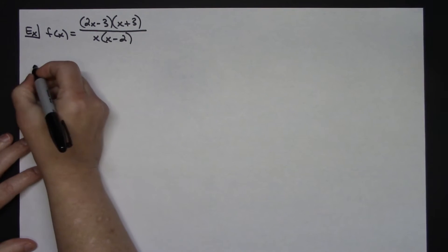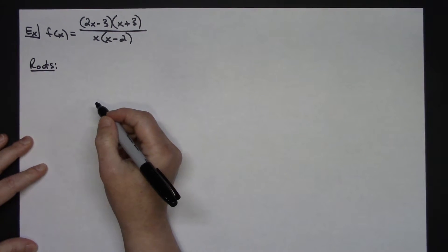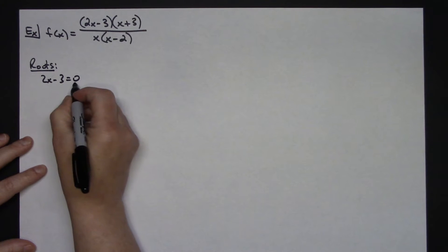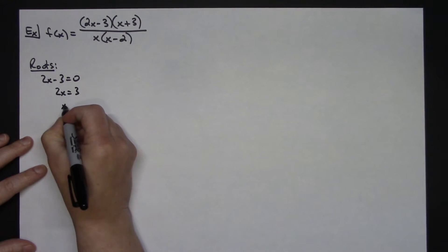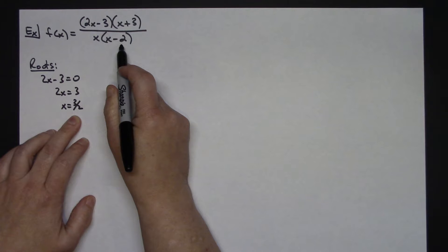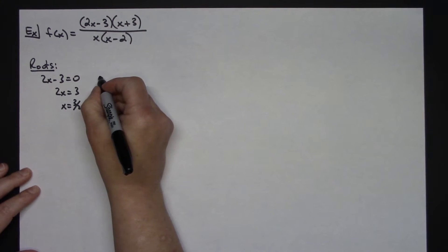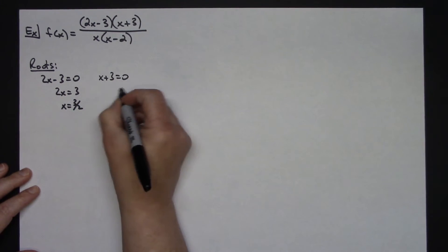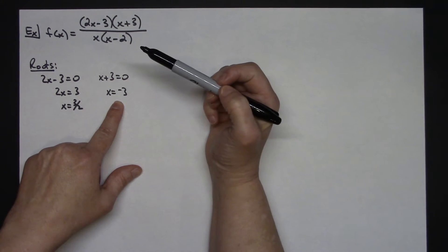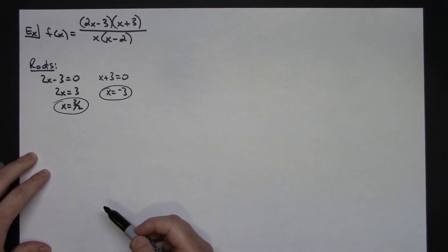Let's go through and find the roots first. I'm going to set each factor in the numerator equal to zero. Taking 2x minus 3, set it equal to zero, and solve: add 3 to both sides, 2x equals 3, x equals 3/2. Checking that in the denominator, I will not get any zeros there, so one root is x equals 3/2. Setting the other factor equal to zero: x plus 3 equals zero, subtract 3 from both sides, x equals negative 3. Plugging that in, I do not get a zero there either. So my two roots are x equals 3/2 and x equals negative 3.